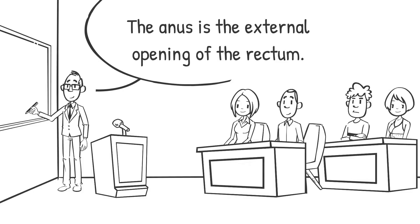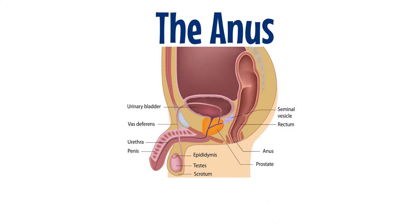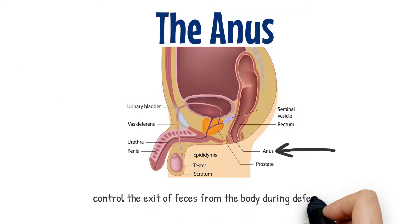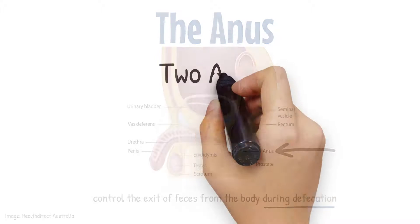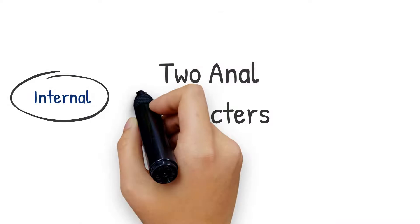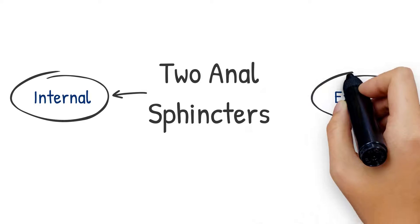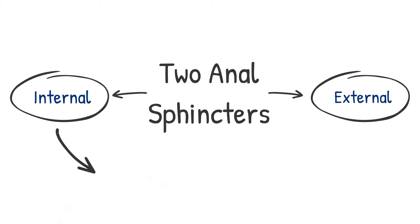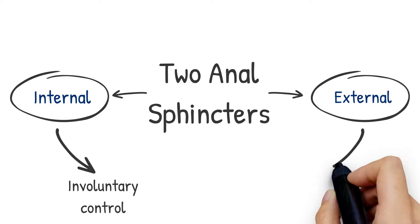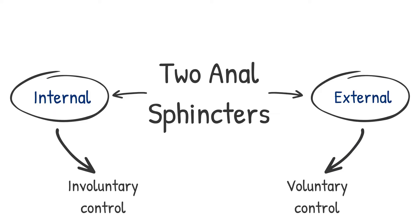It is separated from the genitals by the perineum. Its primary purpose is to control the exit of feces from the body during defecation. The internal and external anal sphincters control its functioning. These are circular-shaped muscles that normally constrict the orifice and relax as required for normal functioning. Control of the inner sphincter is involuntary, whereas the outer is voluntary.